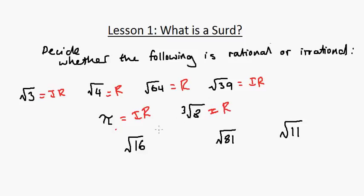The square root of 16 is 4. The square root of 81 is 9, so it's rational. And this is finally irrational. If you got all of them right, it means you can proceed to the next step.